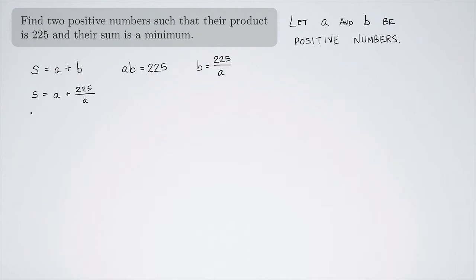So in this case, I'm going to take the derivative of S with respect to A. And that's going to give me, the derivative of A is 1. This is the same thing as 225 times A to the negative 1. So when I take the derivative, it's going to become minus 225 over A squared. And I'm going to set the derivative equal to zero.